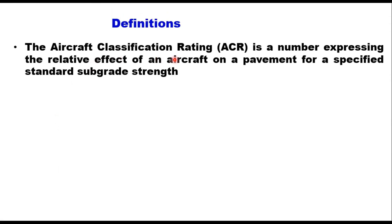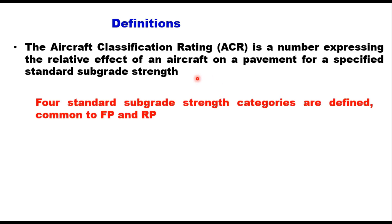The Aircraft Classification Rating (ACR) is a number expressing the relative effect of an aircraft on a pavement for a specified standard subgrade strength. For this purpose, four standard subgrade strength categories are defined, and they are common to both flexible and rigid pavement. In the old ACN/PCN system, the subgrade strength criteria were different for flexible and rigid pavement.